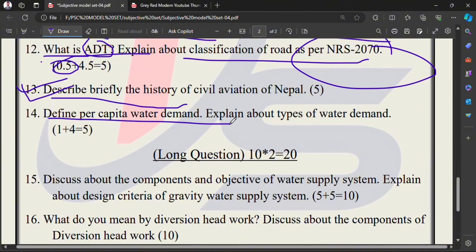14th number: Define design per capita demand. This is water supply. Explain about the types of water demand.